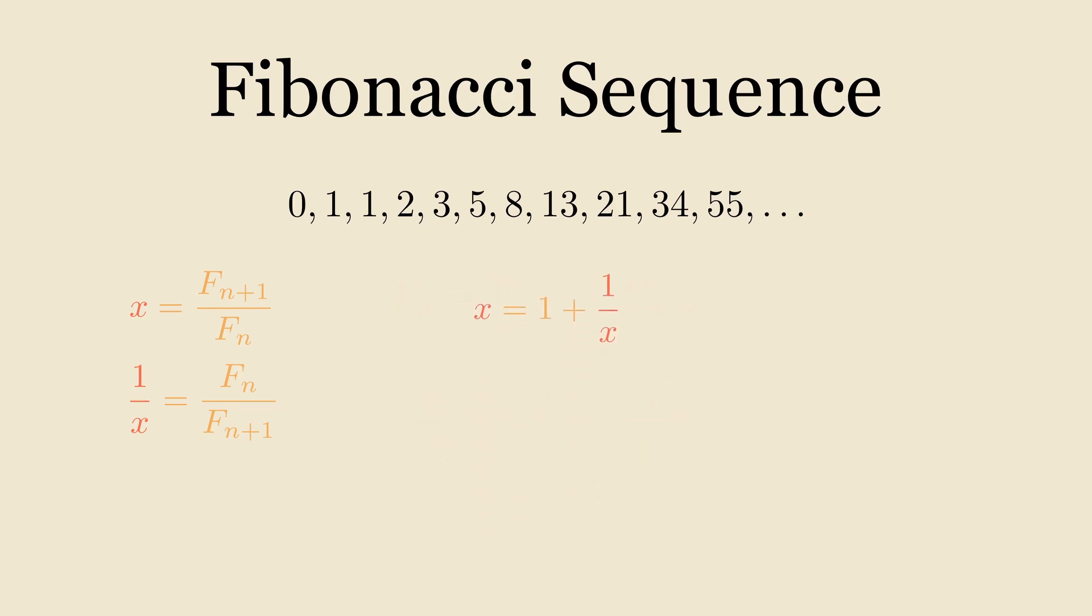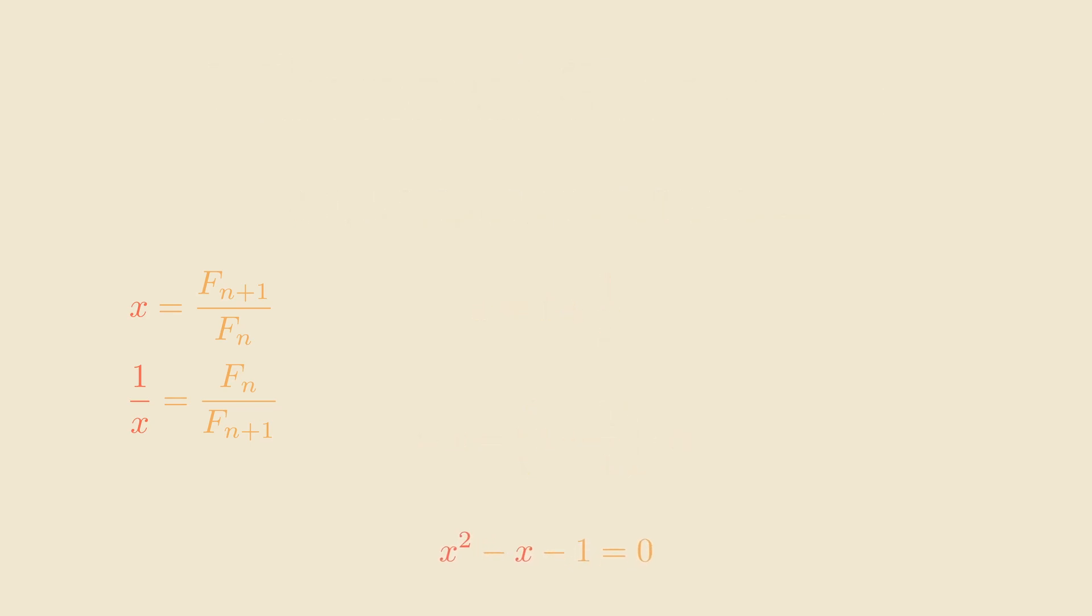Now we have a simple polynomial that is quite easy to solve. We'll multiply both sides of this by x and get x squared equals x plus 1. Now we'll shift everything over to the same side of the equation and set it equal to 0 to make this easier.